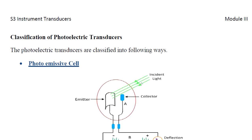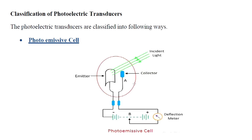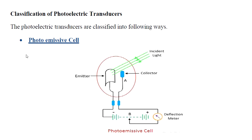The photoelectric transducers are classified into the following types: photoemissive cells, photoconductive cells, and photovoltaic cells.